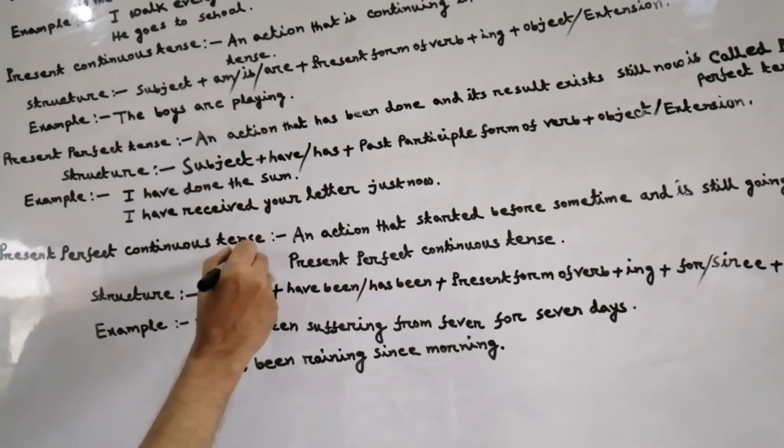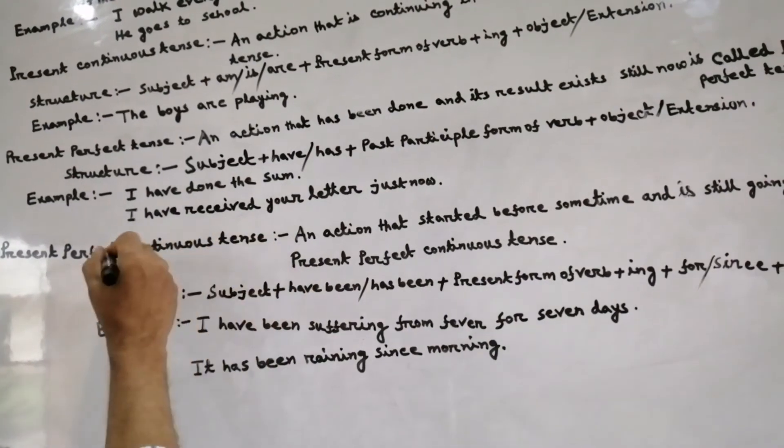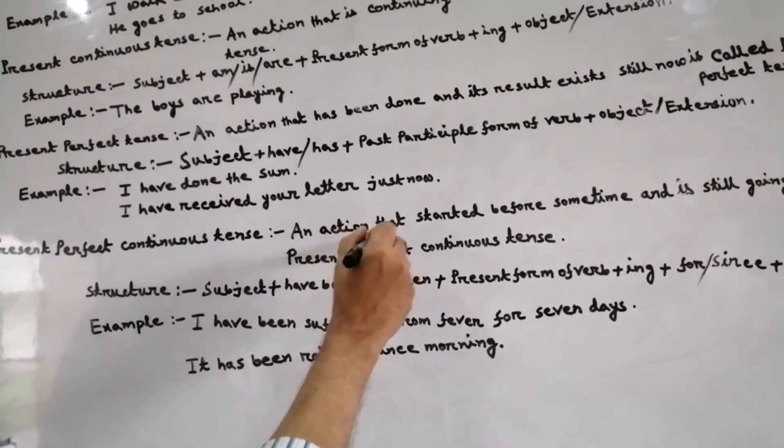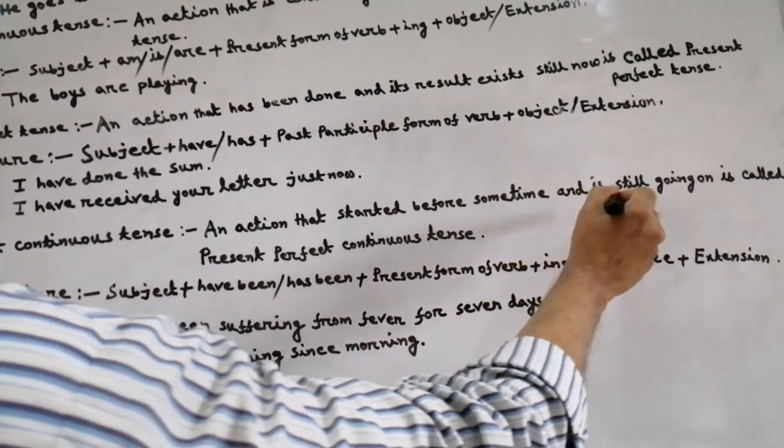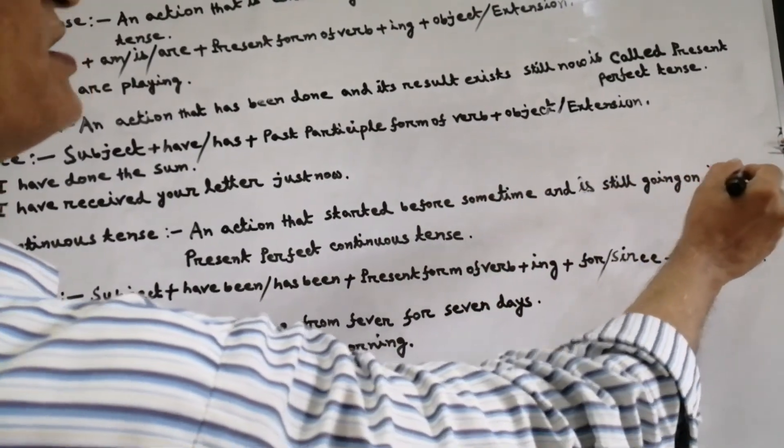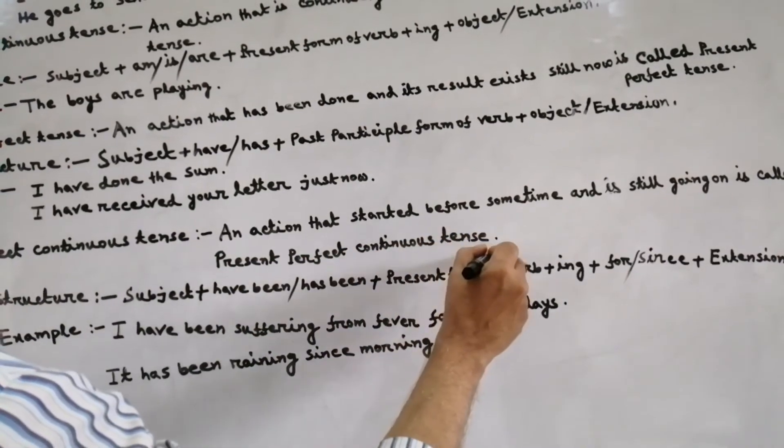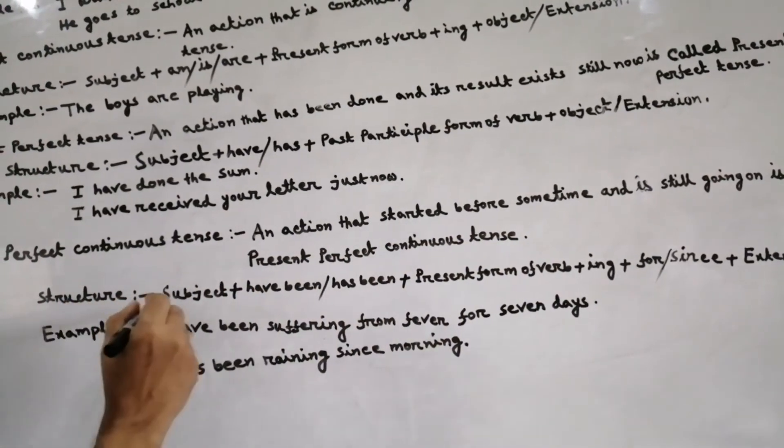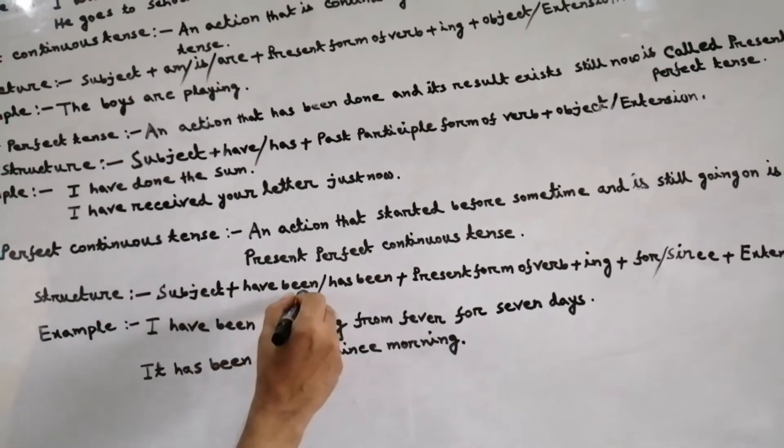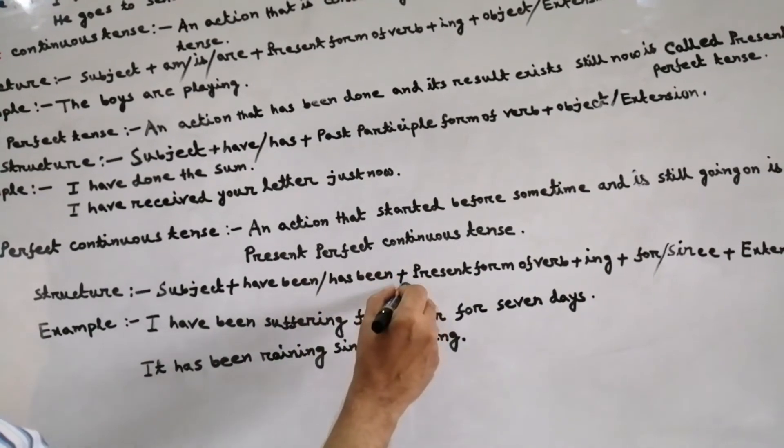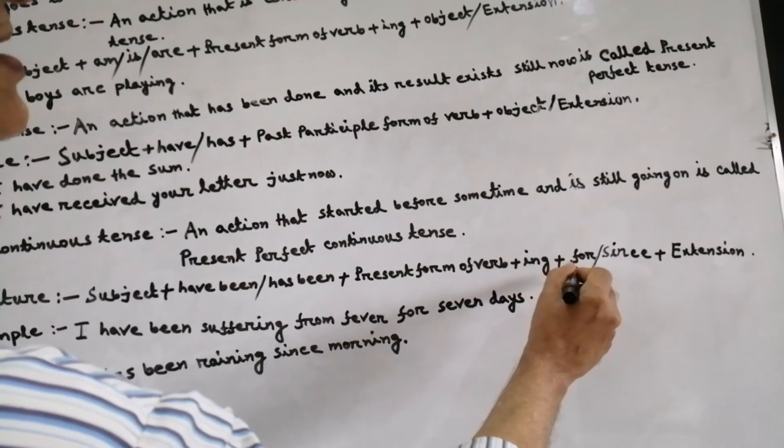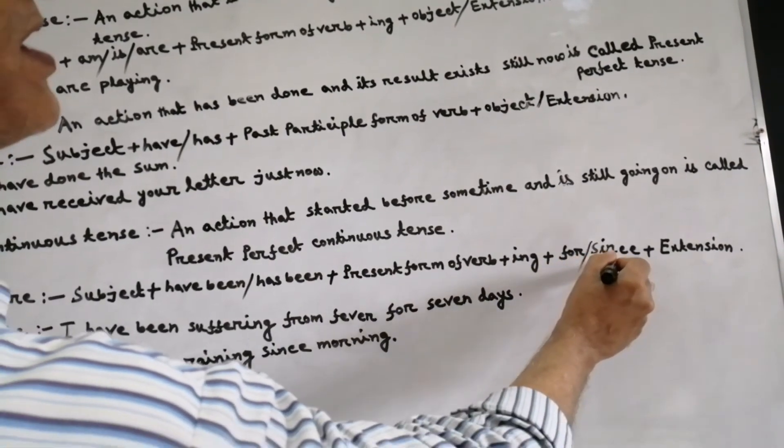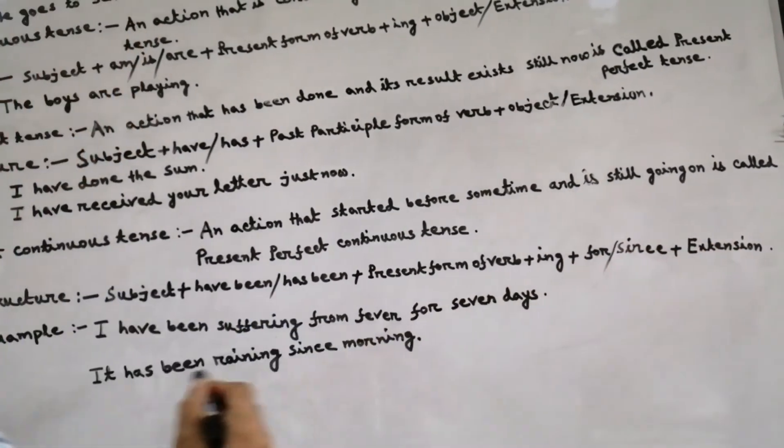Present perfect continuous tense - what is present perfect continuous tense? An action that is started before sometime and is still going on is called present perfect continuous tense. Structure: subject plus have been or has been plus present form of verb plus ing plus for or since plus extension.